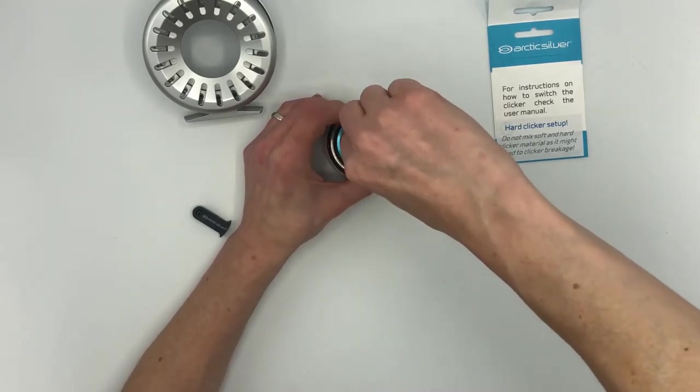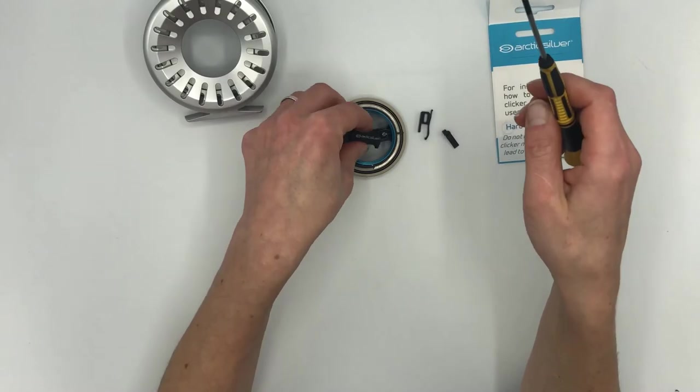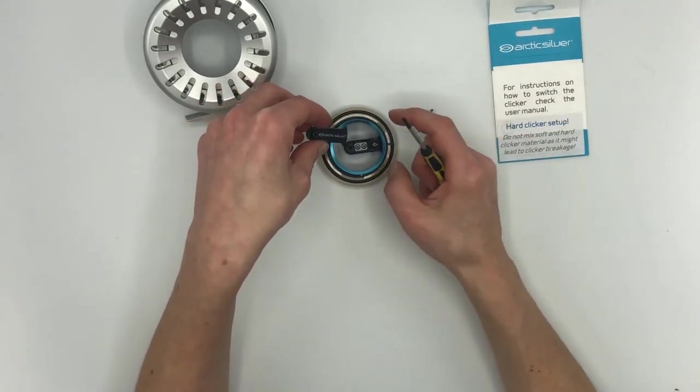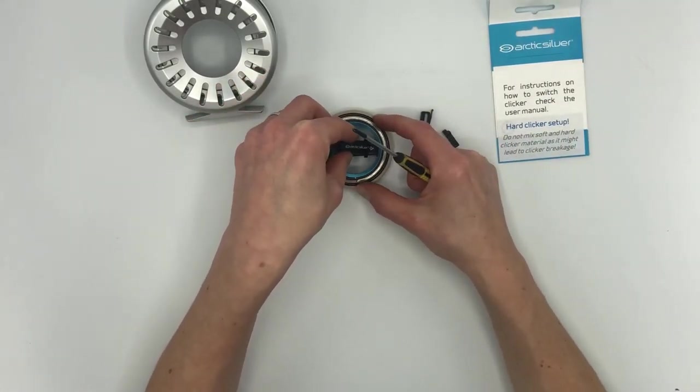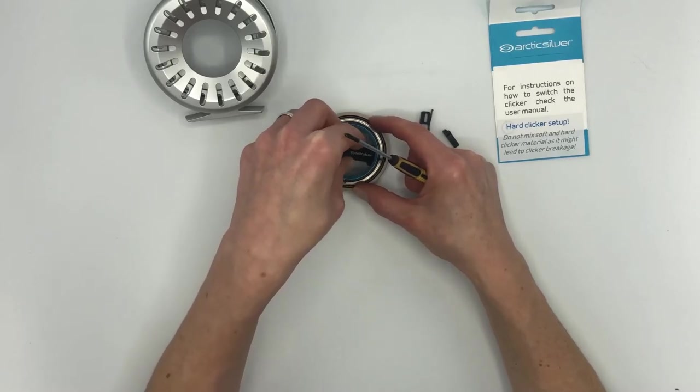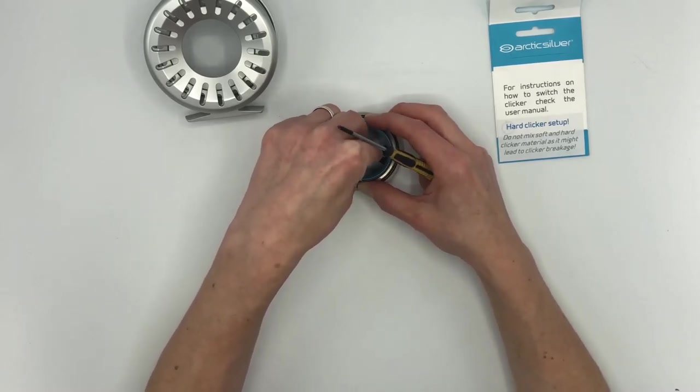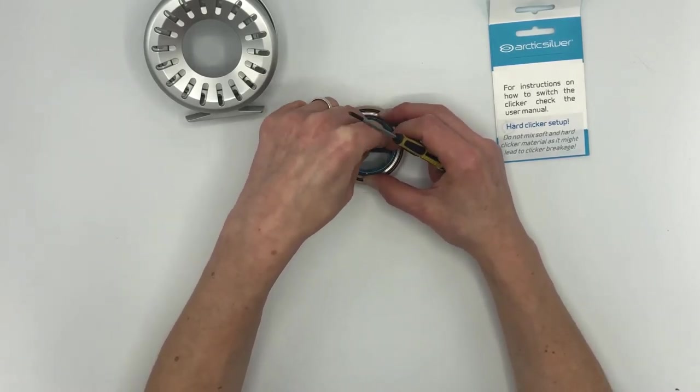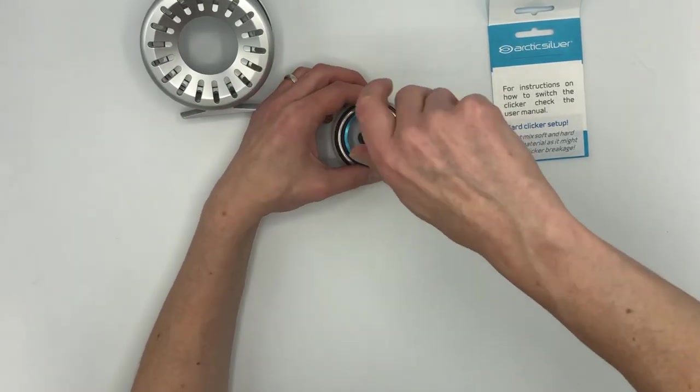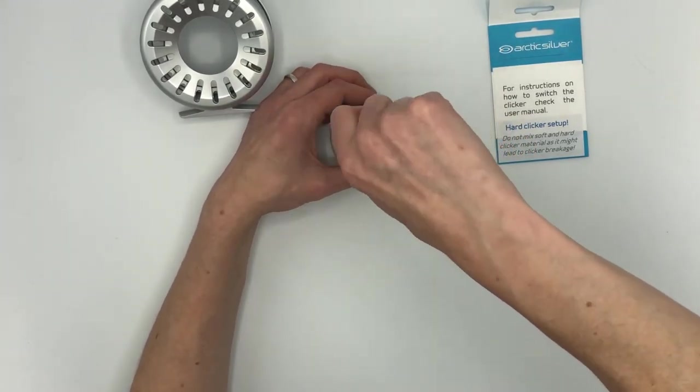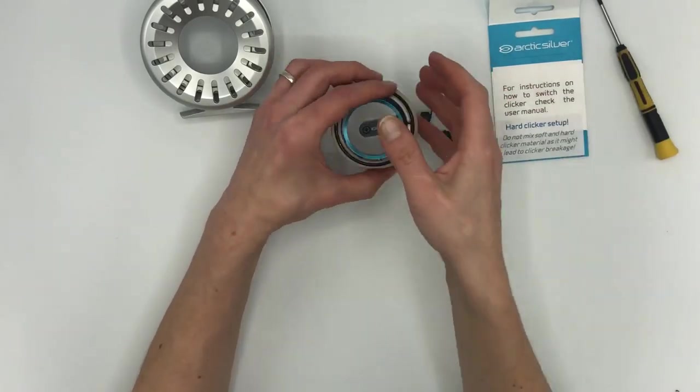Then just assemble the clicker cover again. Slide it in here where the blue part is, like this, and then you're good to tighten it.